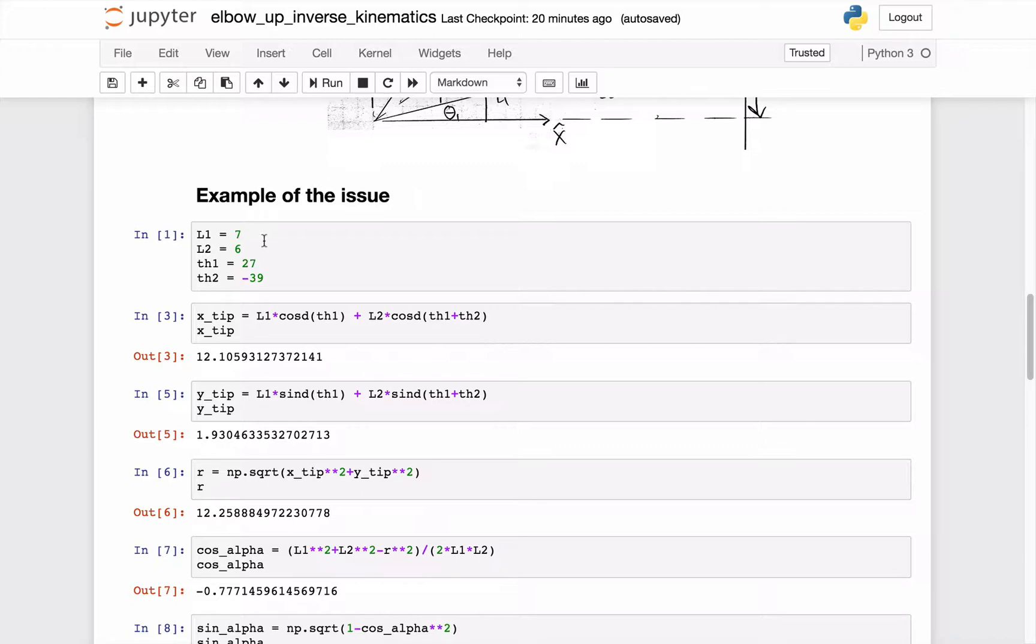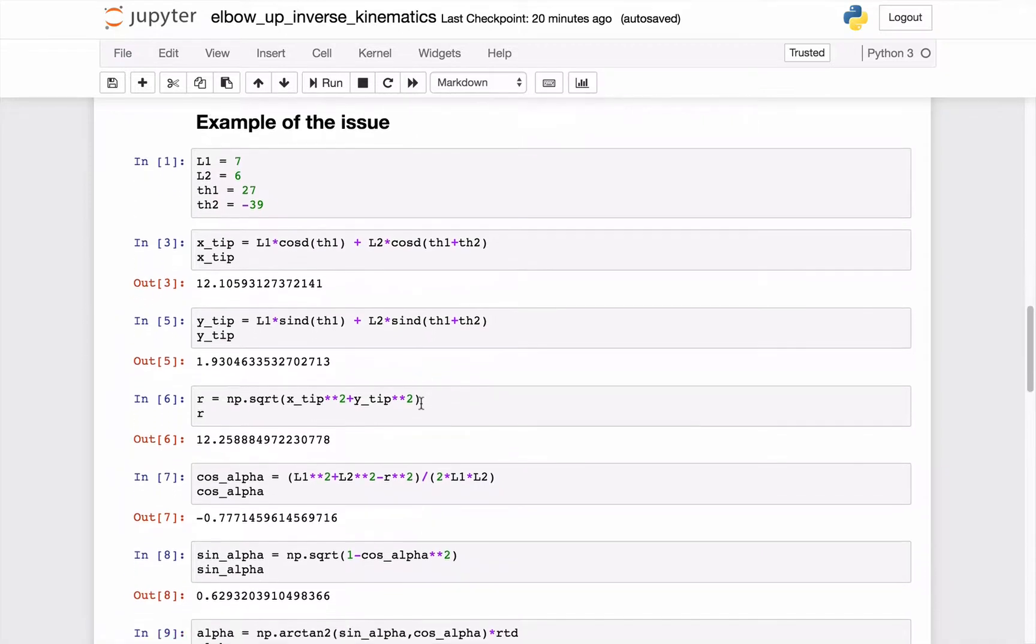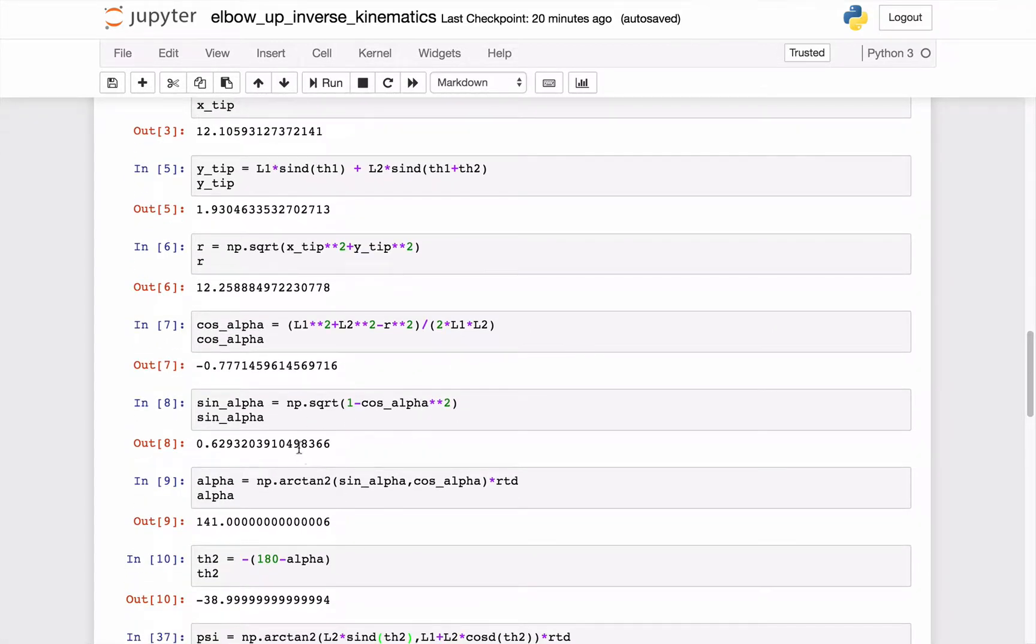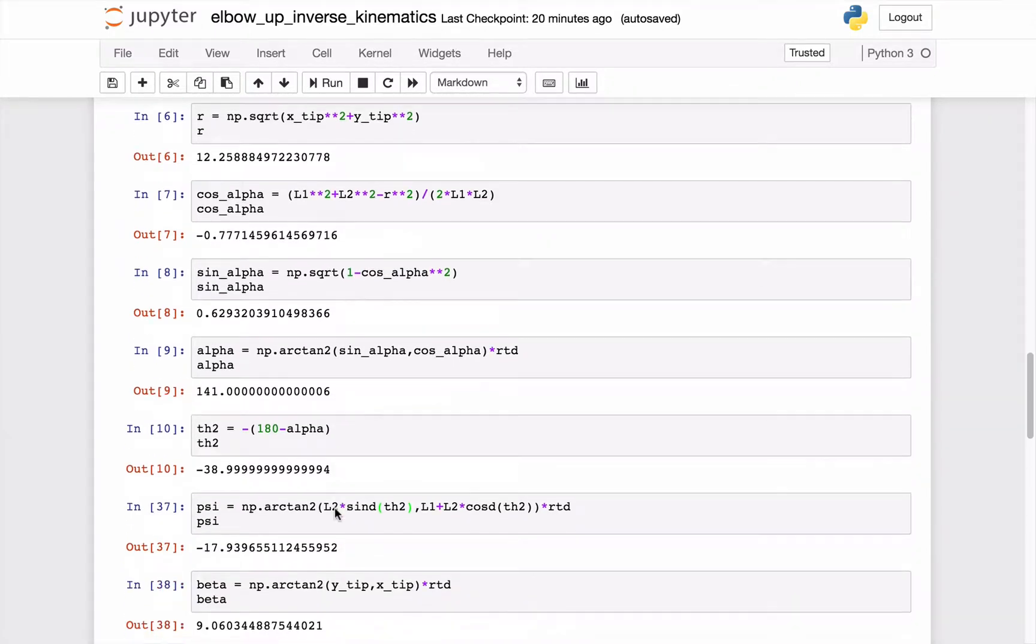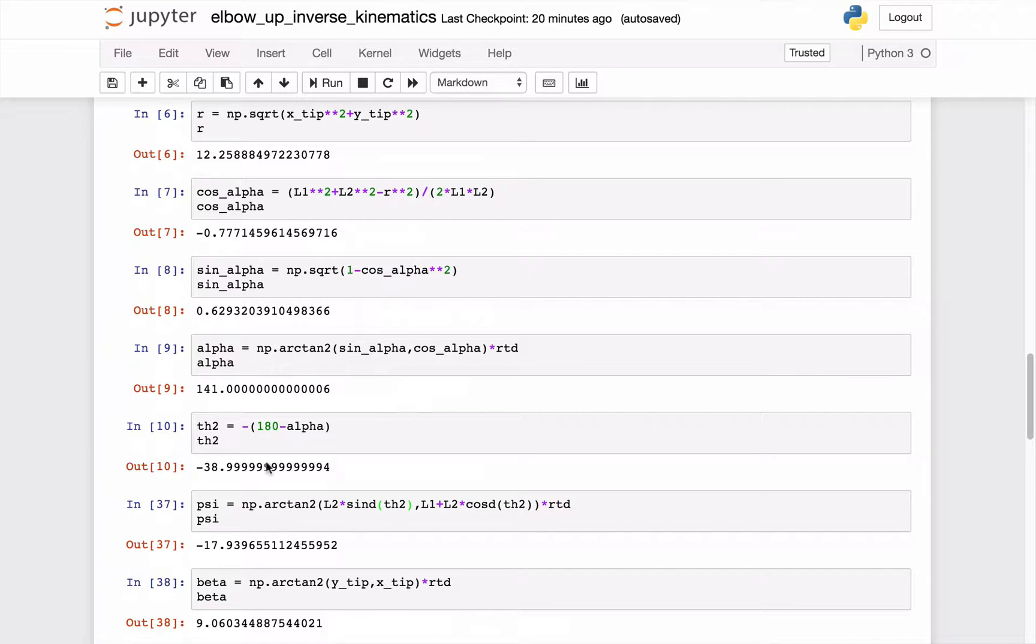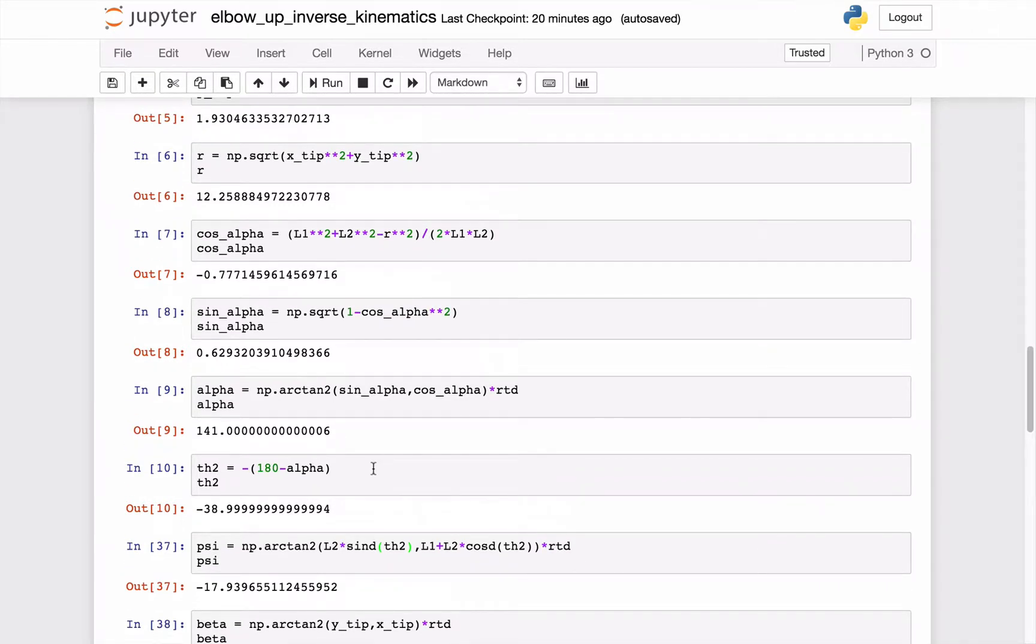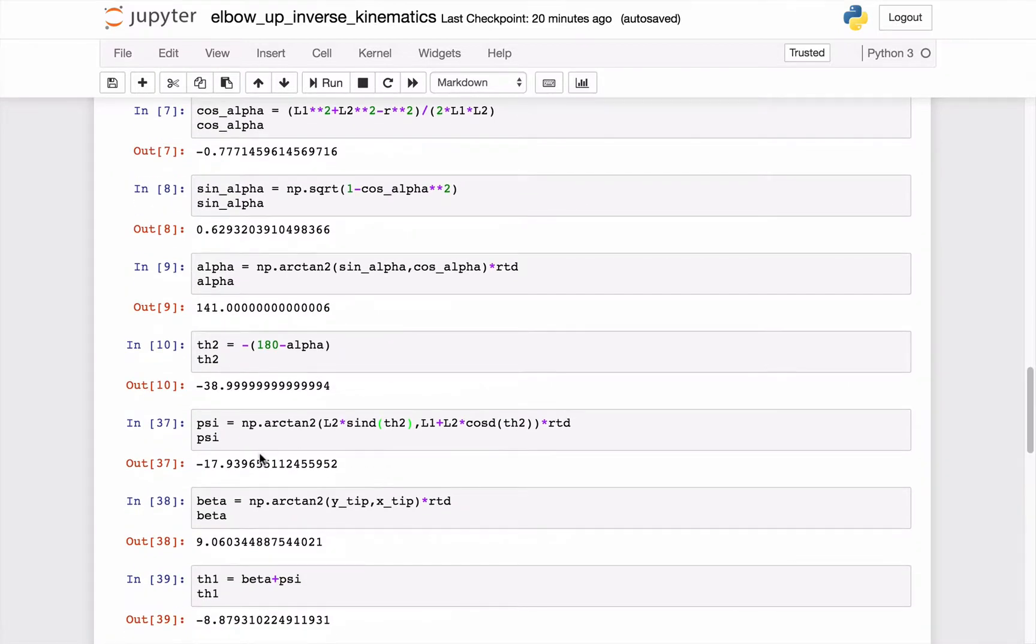So if I choose a negative theta-2, I'm choosing an elbow-up solution, make up some parameters and solve for x-tip, y-tip. So based on 27 degrees, negative 39 degrees, and 7 inches and 6 inches, I have this x-tip. So from there, I can just kind of crank through the stuff we just talked about, right? Like here's r, here's cosine alpha. I'm trying to find the sine alpha in kind of a rigorous way. Alpha is 141 degrees. Great. Theta-2 then becomes a negative 39 degrees for the elbow-up solution. Okay, that's awesome.